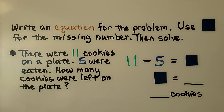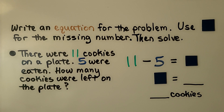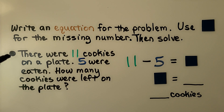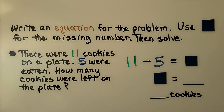Write an equation for the problem, using a square for the missing number, then solve. There were 11 cookies on a plate. Five were eaten. How many cookies were left on the plate?